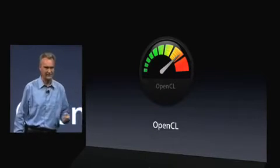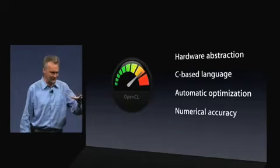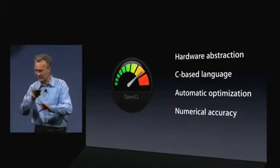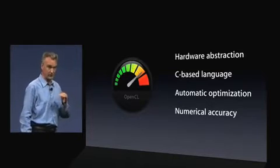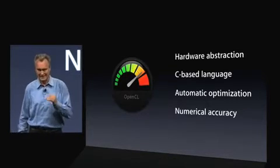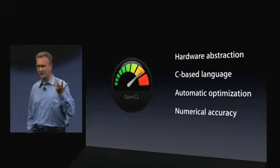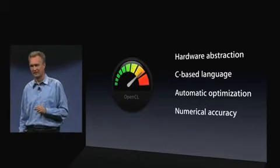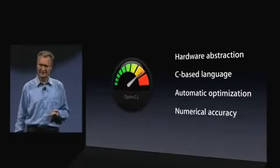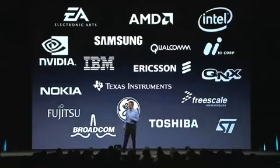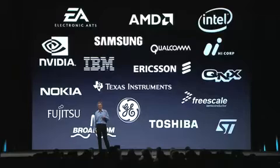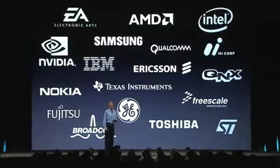The C in OpenCL stands for computing. It protects you as developers from exactly what card the user has. It's based on C, so there's a very low learning curve. It uses sophisticated compilation techniques to optimize, and it has numerical accuracy, which means you can use it for scientific computation. We've also decided to make it an open standard, and many companies are participating — in fact, all the top manufacturers of graphics chips are in.